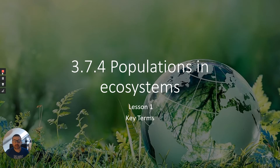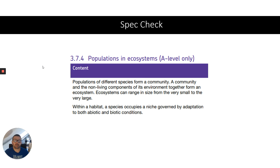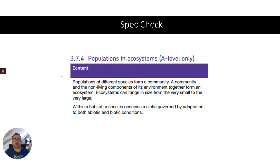Hi everyone, it's Dr Burgess here. This is starting a brand new topic which is on the AQA A-level spec: 3.7.4, populations in ecosystems. Today I'm going to be looking at key terms. Just a quick spec check — we're going to look at how populations of different species form a community, and how the community and the non-living abiotic factors of its environment together form an ecosystem. Ecosystems can range in size from the very small to the very large. Within a habitat, a species occupies a niche governed by adaptation to both abiotic and biotic factors.